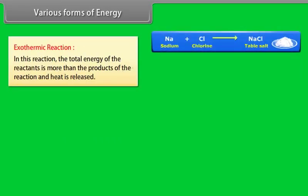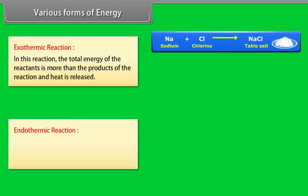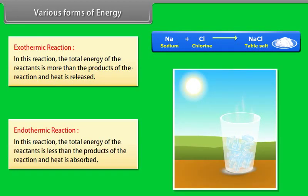Exothermic reaction: In this reaction, the total energy of the reactants is more than the product of the reaction and heat is released. Endothermic reaction: In this reaction, the total energy of the reactants is less than the product of the reaction and heat is absorbed.